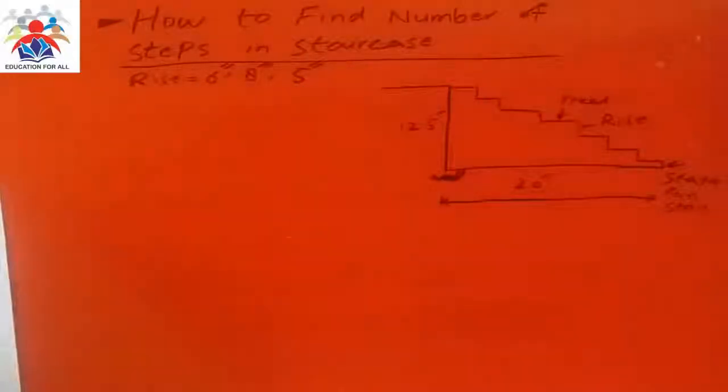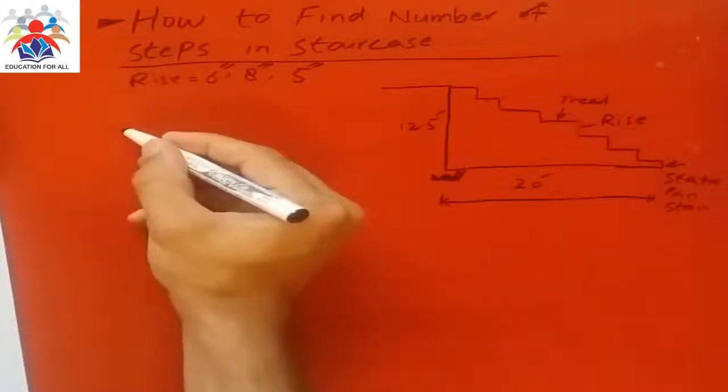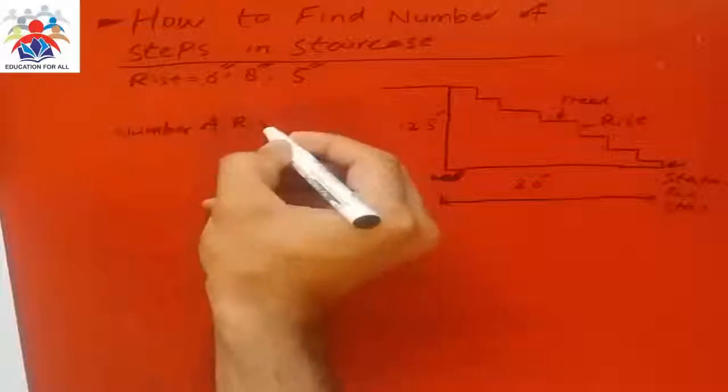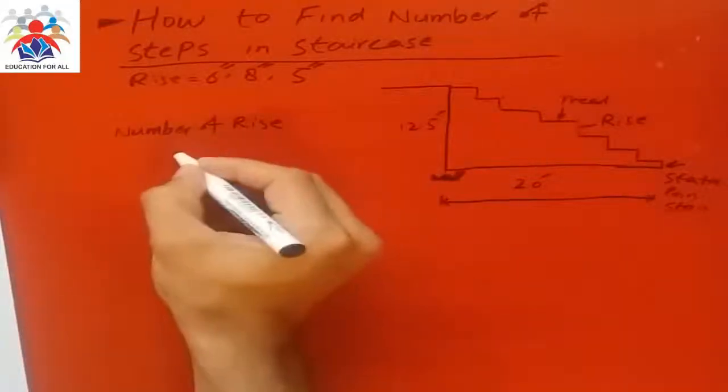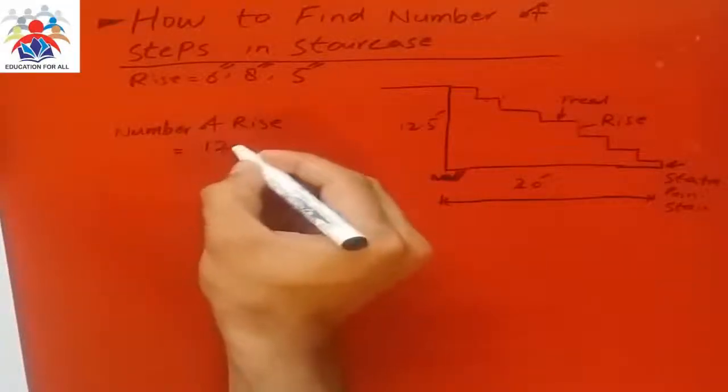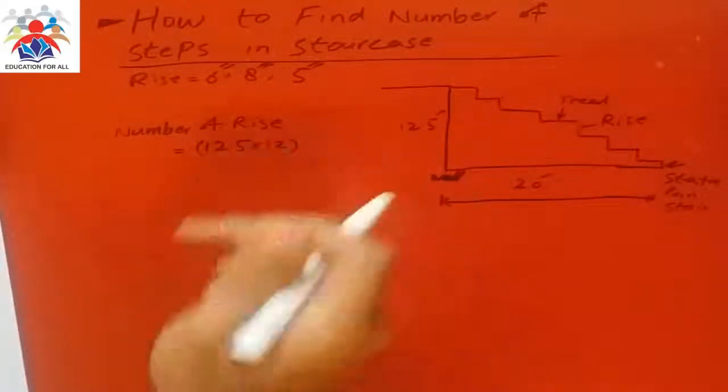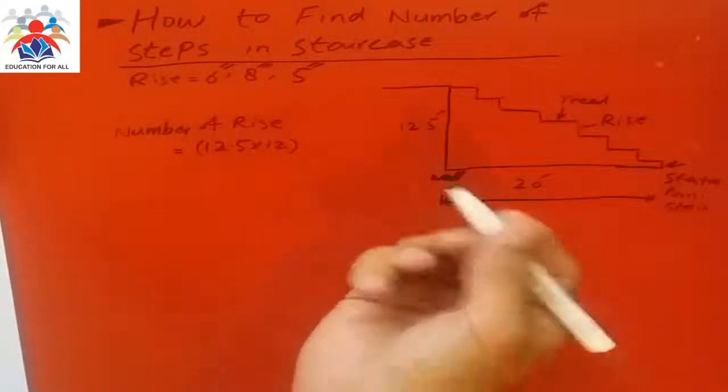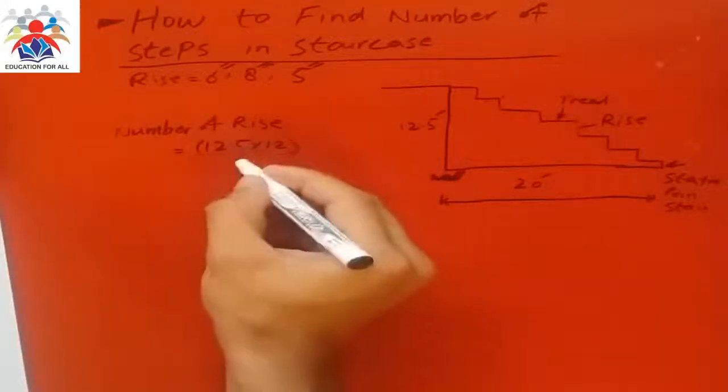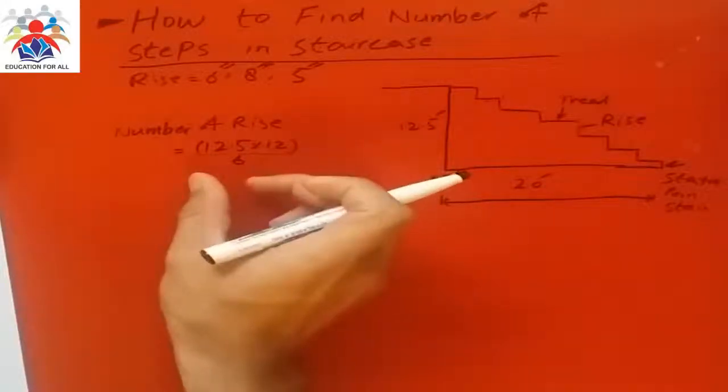Number of rise we have to calculate first. Number of rise is equal to 12.5 multiplied by 12 because we are going to calculate it into inches, divided by six, because each rise is six inches high. So we will get number of rise 25.